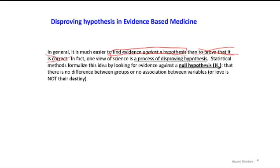The null hypothesis says the drug doesn't work, or there is no difference between groups, or no association between variables. So why is that? If you try to prove that water boils at a temperature of 100 degrees and try to support the alternative hypothesis — say water boils at 100 degrees — how many evidences do you need? You might try to boil water in New York, Los Angeles, the mountains of Montana, or Hawaii. Is that enough? How about Japan, China, Africa? To prove it universally, you have to collect a limitless number of evidences.